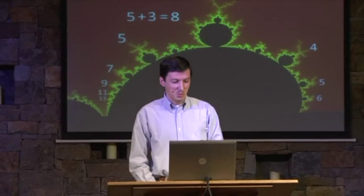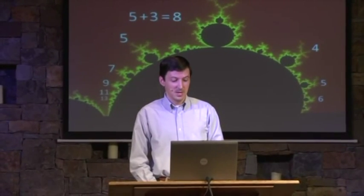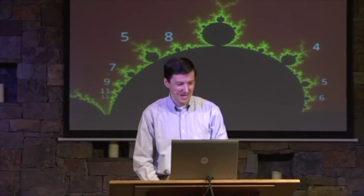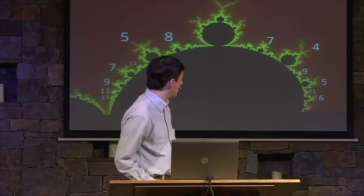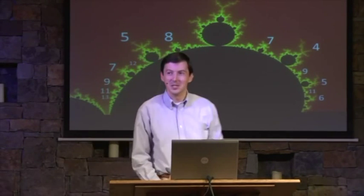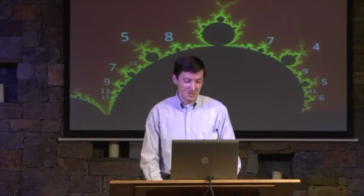And perhaps even more interestingly, five plus three is eight, and the little shape in between them has eight. That's always the case. Whenever you check the bud in between two shapes, it adds the number of stems — no matter where you're at. So three and four is seven — that's how many it has. Four and five is nine — that's how many it has, and so on. So somehow it knows how to add. That's kind of neat. Just amazing.